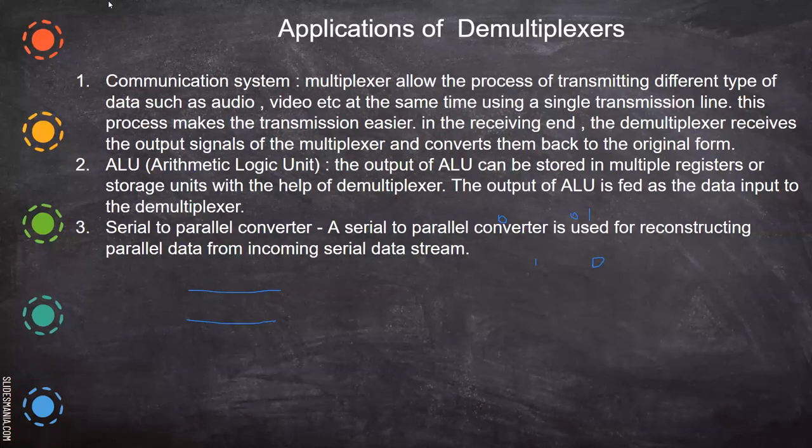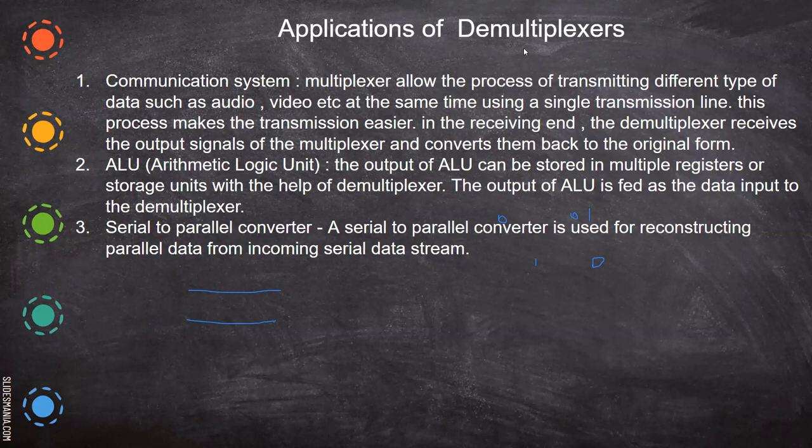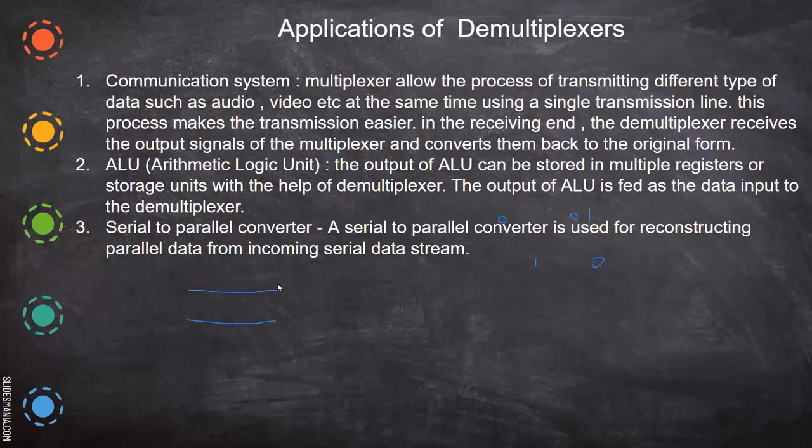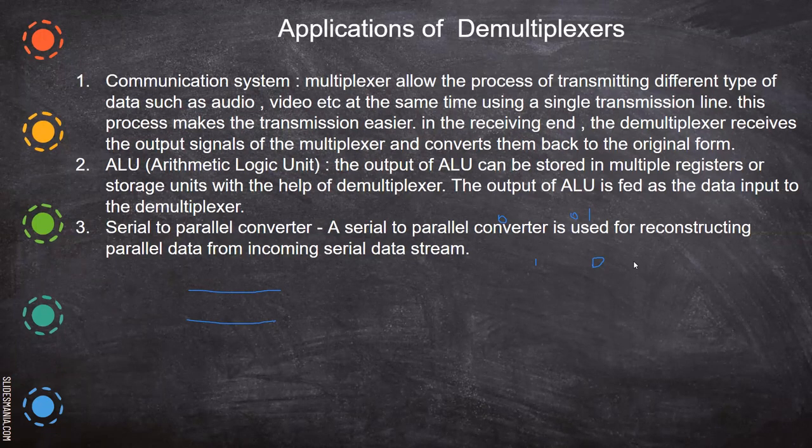Demultiplexers are used in communication systems. Multiplexers allow the process of transferring different types of data such as audio, video, etc., at the same time using a single transmission line. This process makes the transmission easier. Everything is combined and the output is single. In that single line, all these travel.